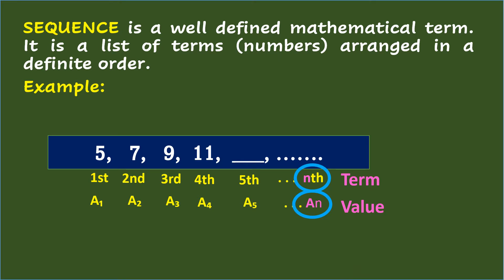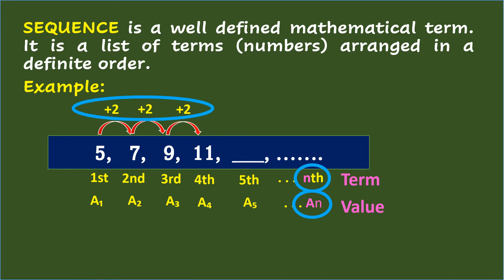Going back to the sequence, if you look at the terms, you would see that the terms are increasing. From the first term, which is 5, we add 2 to get the second term, which is 7. Then from 7 to 9, we add 2 again. From 9, we add 2 to get 11. This means that the common difference of the terms is 2, and this common difference is represented by the small letter d.